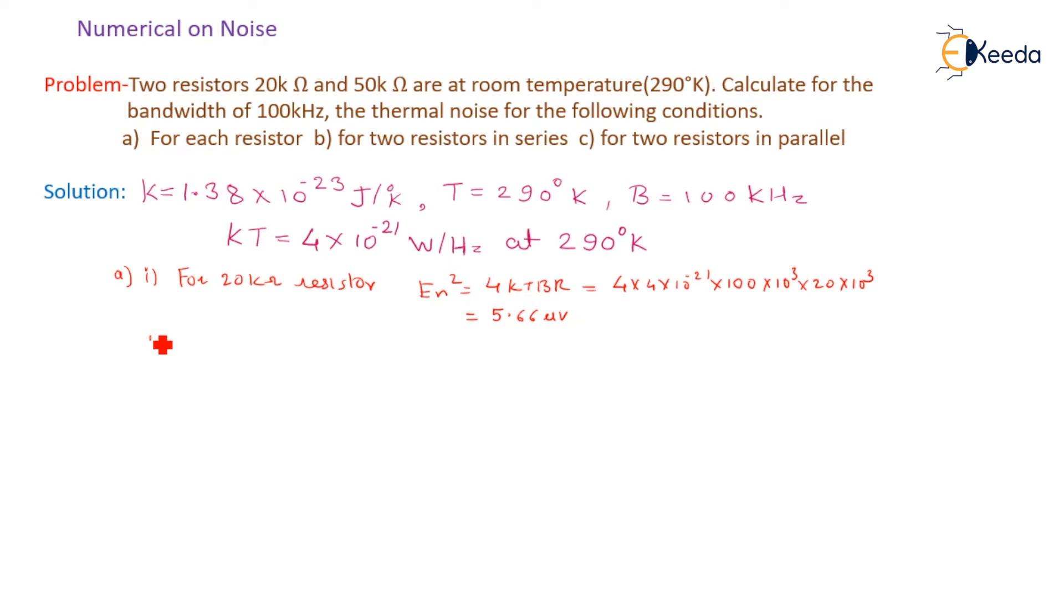And second case here we will consider for 50 kΩ resistor. So En² will be, particularly directly we will put the value as per the formula. En value is 8.95 microvolts.